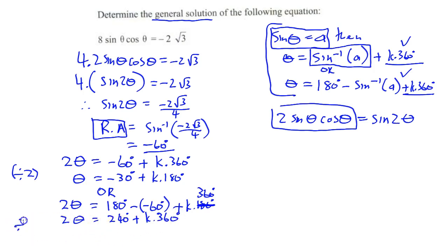Once again, we're going to divide by 2. So it will be theta equals 120 plus k dot 180. At the end of our solution, we write k element integer. So just a quick recap.